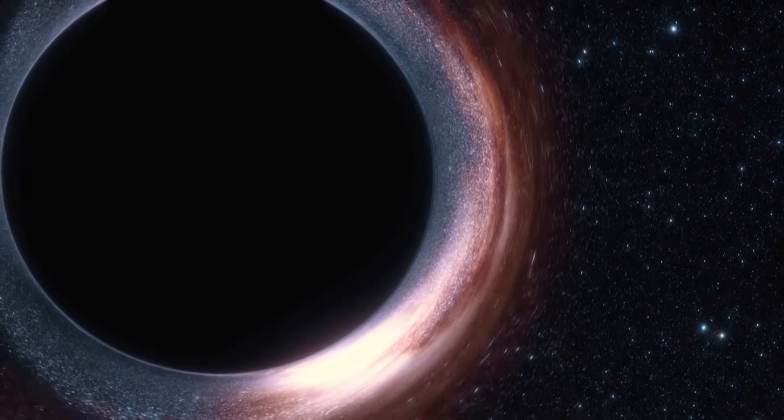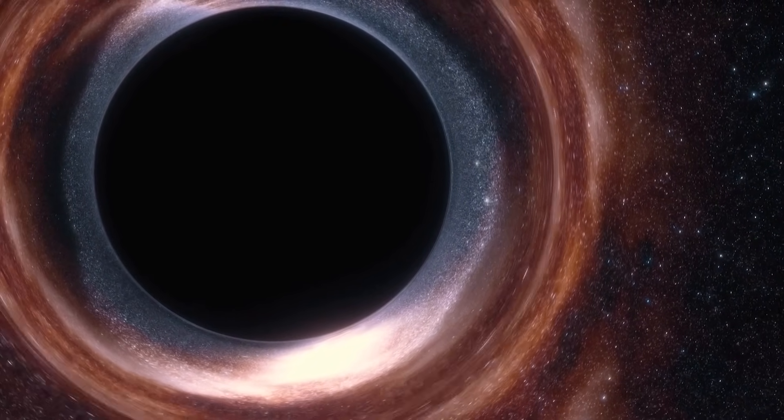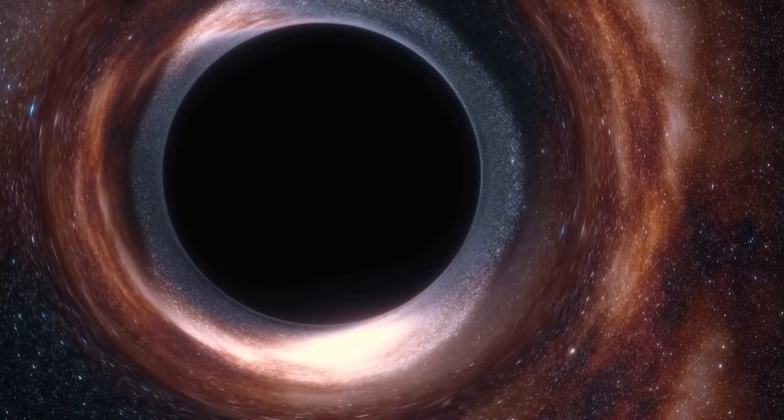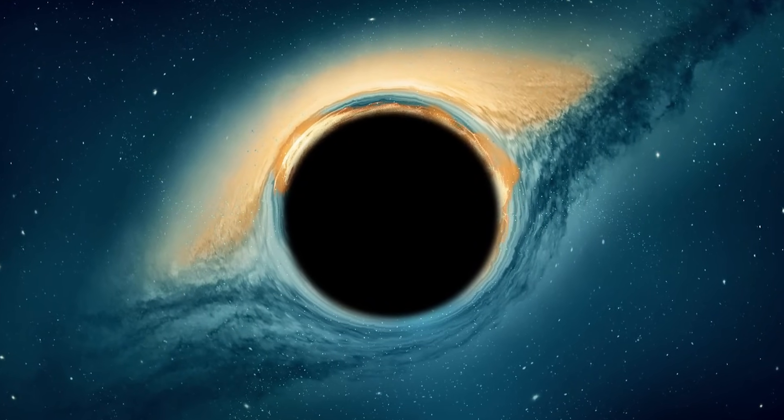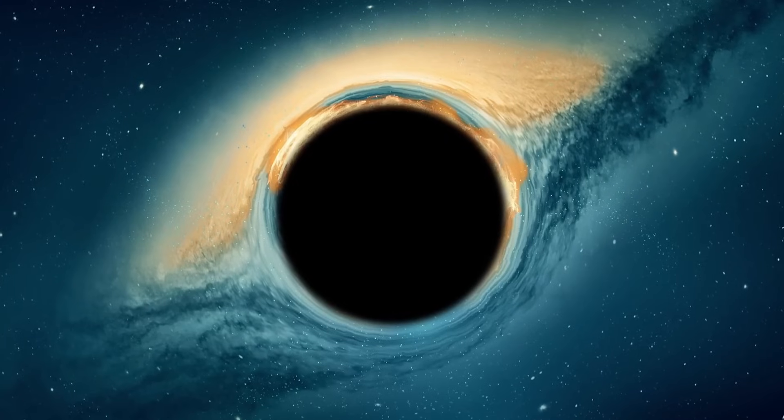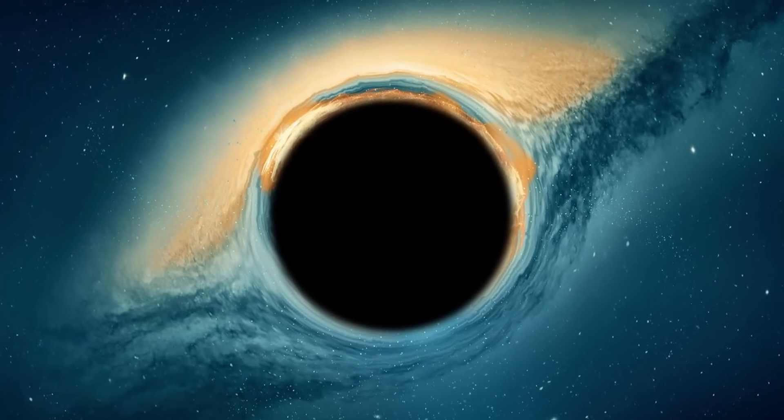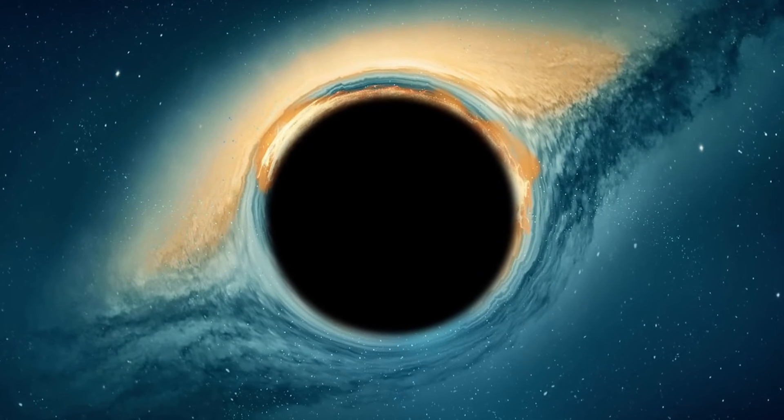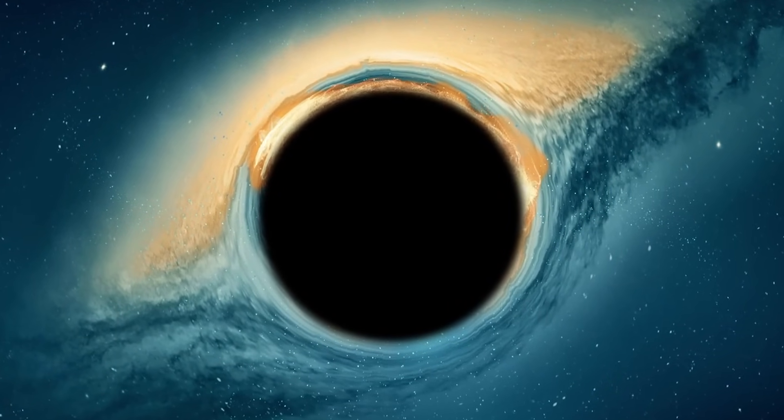As we well know, black holes possess extremely powerful gravitational force that even light cannot escape. However, in the vicinity of a black hole, one often finds a spinning disk of material, such as gas or dust, concentrated by its immense gravity. This material heats up as it spirals towards the black hole, emitting X-rays and other types of radiation, creating a luminous ring known as a corona.